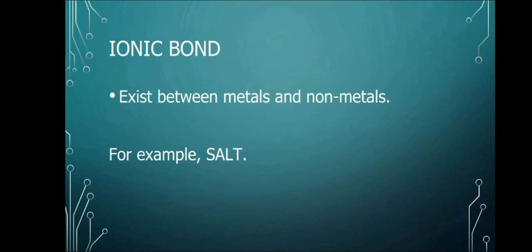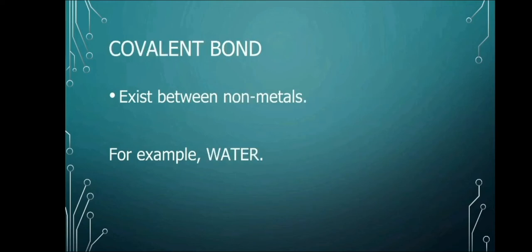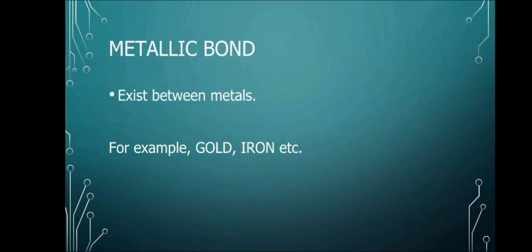So let's talk about ionic bond. Ionic bond exists between metals and non-metals. For example, our salts, our sodium, and our chlorine. And then we have covalent bond. Covalent bond exists between non-metals. Example of that is water. And then we have metallic bond. It exists between metals. From the word itself, metallic. It exists between metals. What is an example of that? It's gold, iron, and etc.